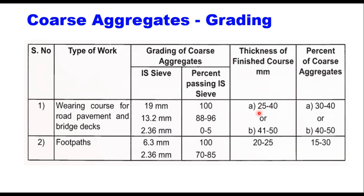In case of 25 to 40 mm thickness, the coarse aggregate will be 30 to 40%. In case of 41 to 50 mm thickness of the mastic, the coarse aggregate will be 40 to 50%. When used in footpaths, gradation of aggregate will be only 6.3 mm and 2.36 mm, thickness is 20 to 25 mm, and percentage of coarse aggregate will be 15 to 30% only.